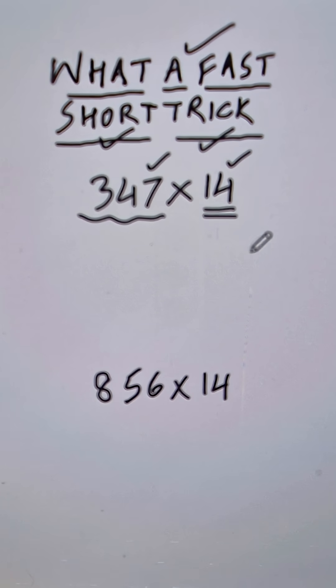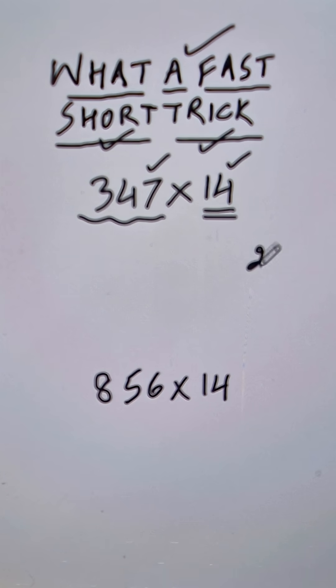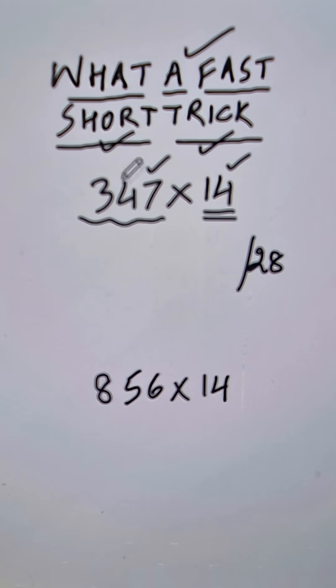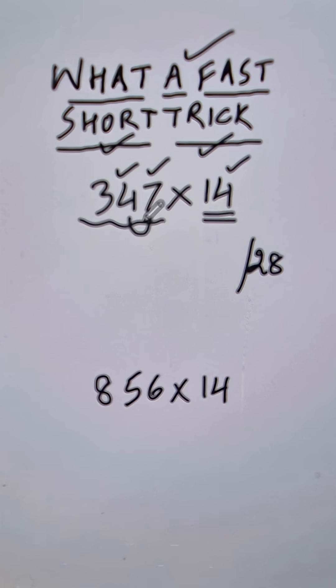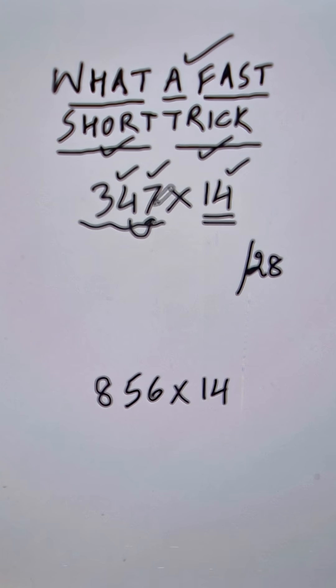Now 7 times 4 is 28, so I will write 28 on the right hand side. And then 4 times 4 is 16. But to that product, I will be adding the next digit. So 4 times 4, 16 plus 7, it is 23.